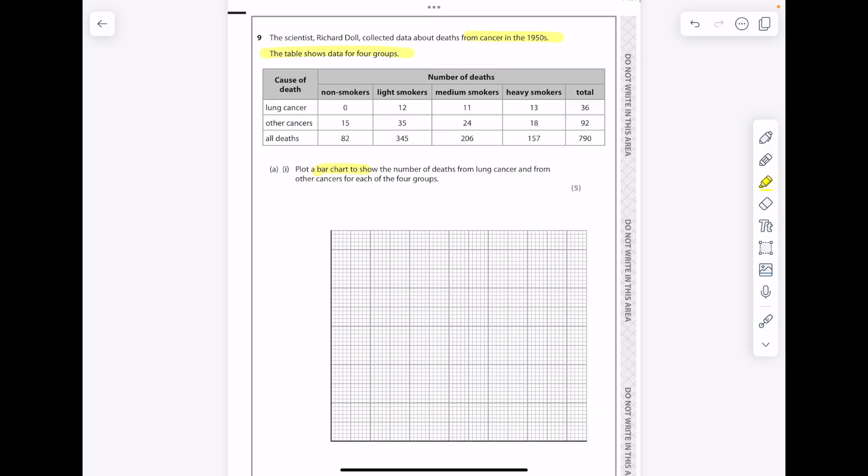Plot a bar chart to show the number of deaths from lung cancer and from other cancers for each of the four groups. So we're looking at lung cancers and other cancers for each of the four groups.